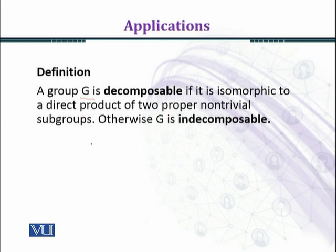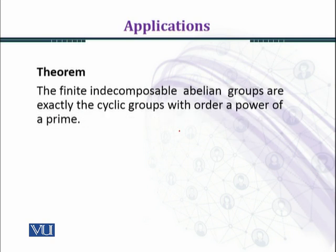nontrivial subgroups. Otherwise G is indecomposable. As you have seen before in examples, we had Z360 and we expressed it up to isomorphism as direct products. So Z360 is an example of a decomposable group.